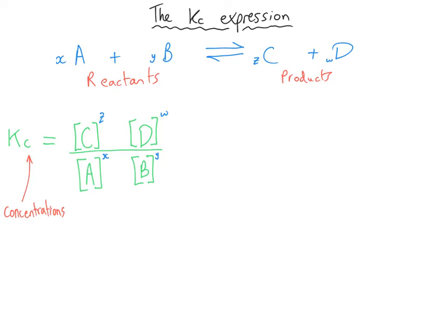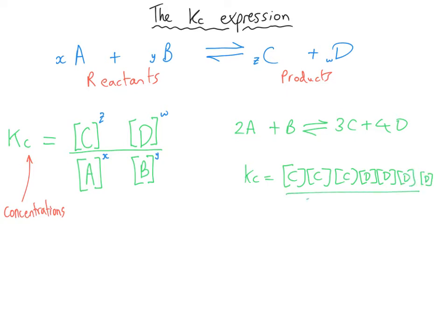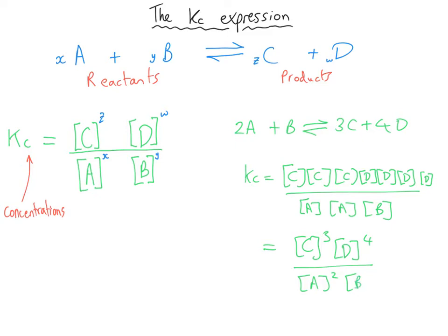For a specific example: if 2A + B turns into 3C + 4D, the Kc expression would have [C]³ × [D]⁴ on the top, and [A]² × [B]¹ on the bottom. Rather than writing [C]×[C]×[C] every time, we just write [C] cubed. So the Kc expression is derived straight from the chemical equation — the coefficient is the power that a chemical's concentration is raised to, products on top, reactants on the bottom.